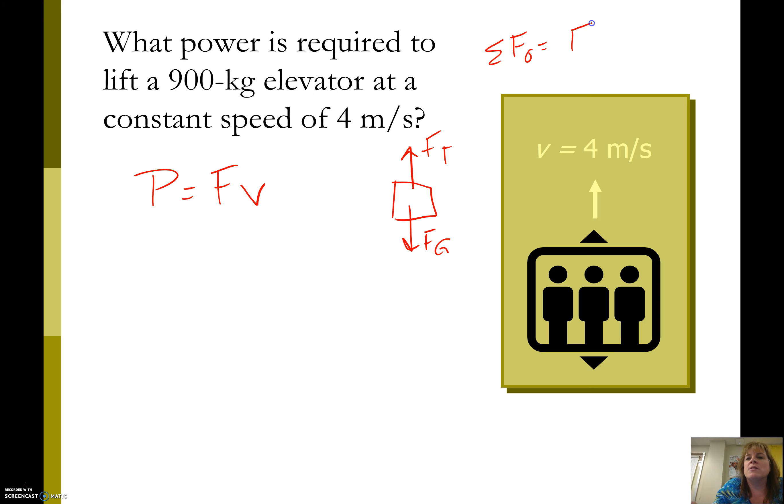So the tension force, or lifting force, is the same as the force of gravity. The force of gravity is mass times g. So the force is the mass of the elevator times the acceleration due to gravity, and we multiply by the speed. So the force is mg and we multiply by our speed v.